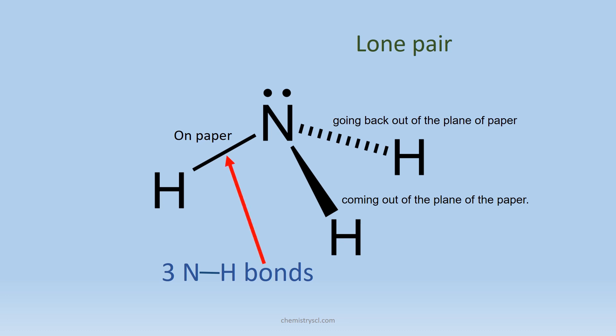One N-H bond is on the plane of paper and another one is going back out of the plane of paper, while the remaining bond is coming out of the plane.